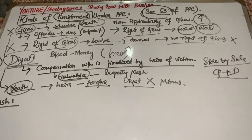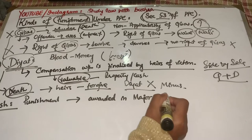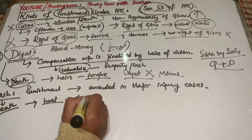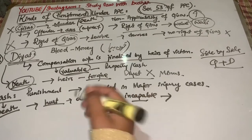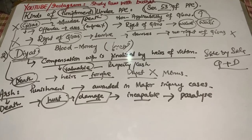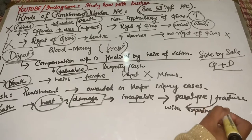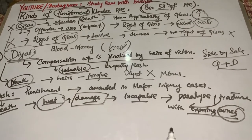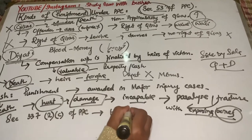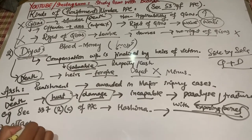Third kind of punishment is Arsh. Arsh is a type of punishment which is awarded in major injury cases. Arsh woh punishment hai jo major injury cases mein award ki jati hai, jahan par ek bande ki death cause nahi hoti, lekin us bande ko itna hurt cause kar rahe hain, ke woh banda incapable ho jata hai koi bhi kaam karne se — paralyze ho jata hai, kisi kisam ka fracture ho jata hai. For example, uska baazu torana, uski tang torana, uska haath torana. Section 337 part 2C jo hai, woh humein Hashima ke baare mein batata hai, jiska matlab hai with exposing bones, that is fracture.